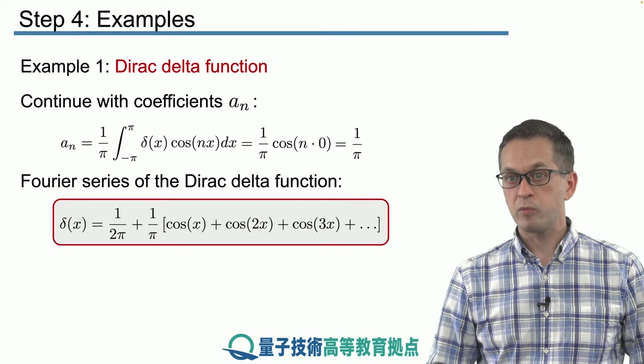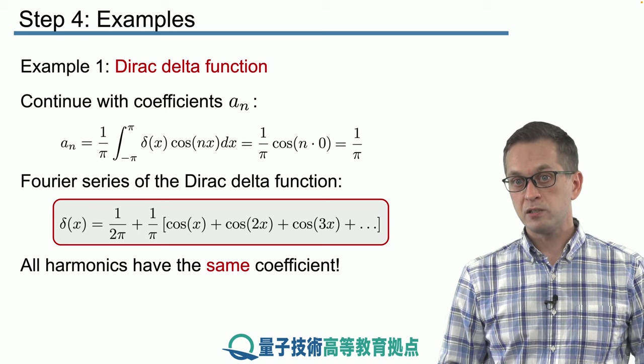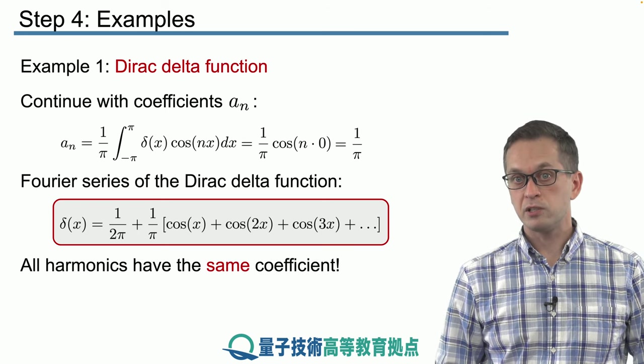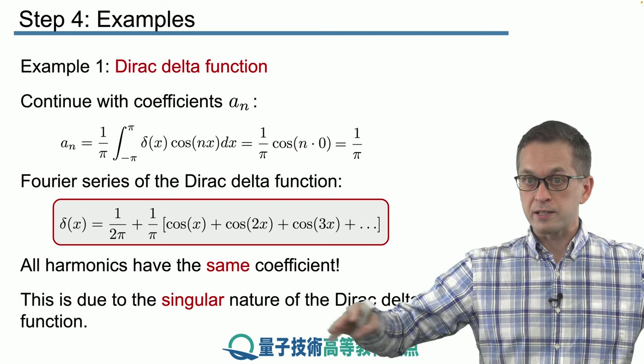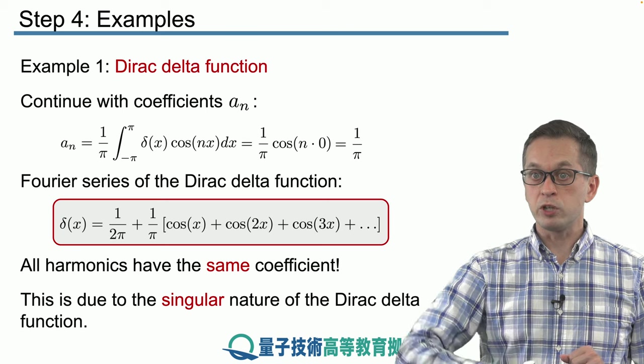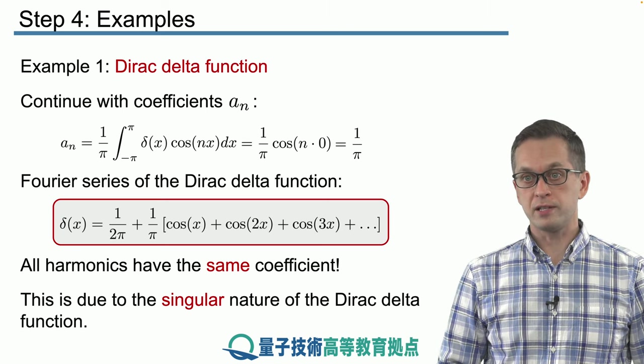This is not true for the delta function. Every single harmonic, whether it's high frequency or low frequency, is equally important. And this is due to the singular nature of the Dirac delta function, where it's 0 everywhere, and suddenly when x is equal to 0, it shoots off to infinity.